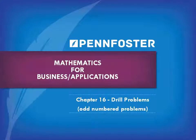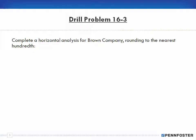Welcome back, students taking Math for Business and Finance — Math Applications. We're doing the Chapter 16 drill problems, the odd-numbered problems. Let's jump to problem 16-3, which says: complete a horizontal analysis for Brown Company, rounding to the nearest hundredth.